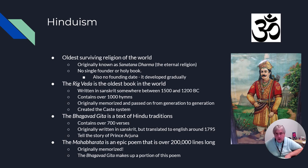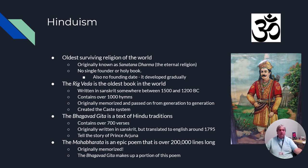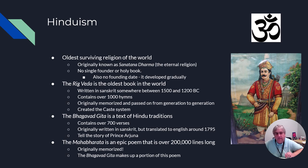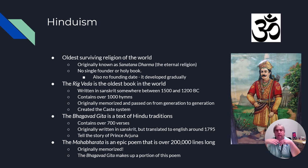The Vedas are holy texts as well as texts about culture and history. The Rig Veda is considered the oldest book in the world, written around 1500 BC — it's a book of over a thousand hymns, and the longer the hymn, the more important the deity or topic. The Rig Veda was originally memorized and handed down generation to generation. Another important book is the Bhagavad Gita, a book of traditions containing the earliest Hindu traditions that have developed and continue to develop today, originally written in Sanskrit.